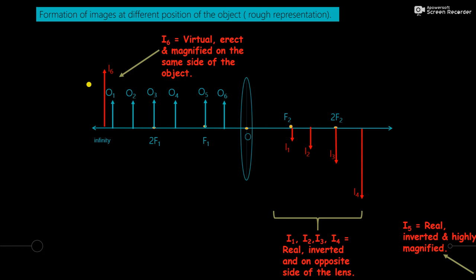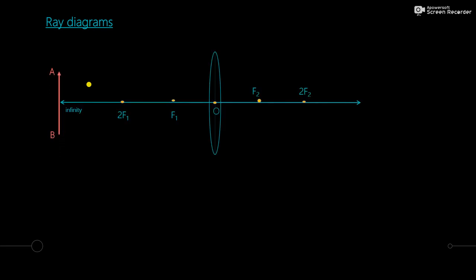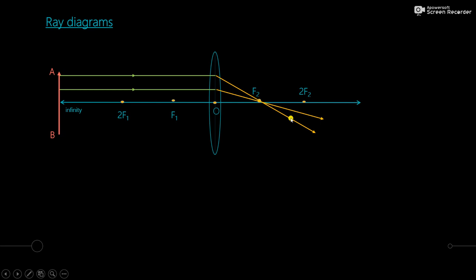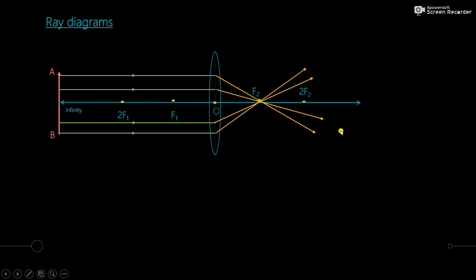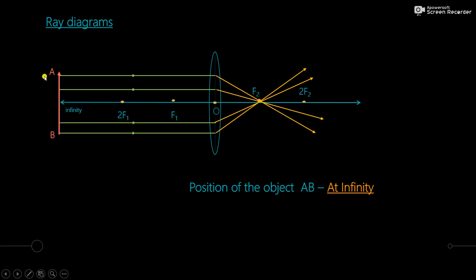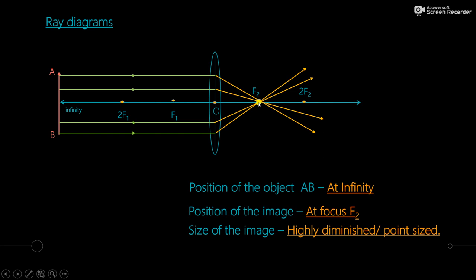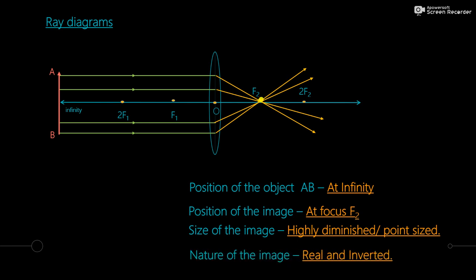Let us now do the actual ray diagrams. If AB is the object at infinity: by rule 1, the incident ray parallel to the principal axis passes through f2. The convergence happens at f2 on the other side of the lens, where refraction takes place. Position of object AB is at infinity; position of the image is at focus f2. Size of the image is highly diminished or point size. Nature of the image is real and inverted.